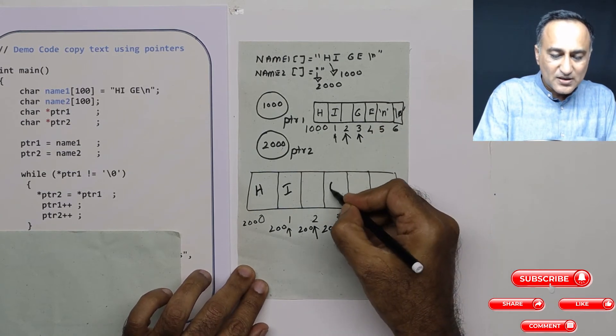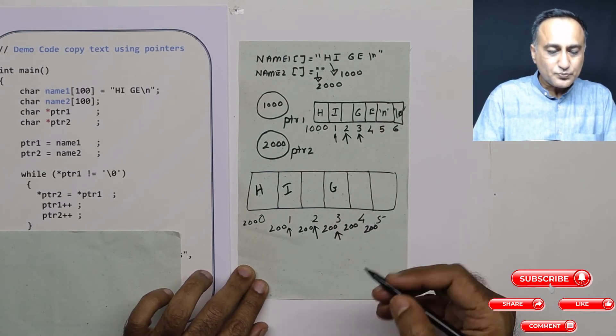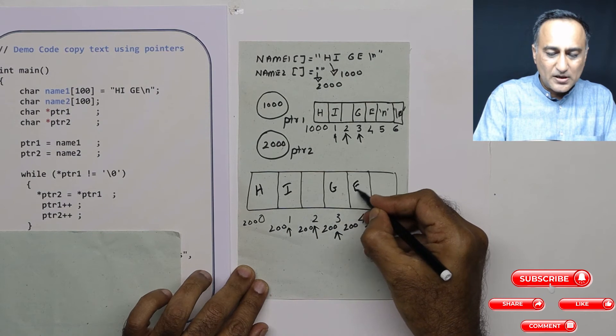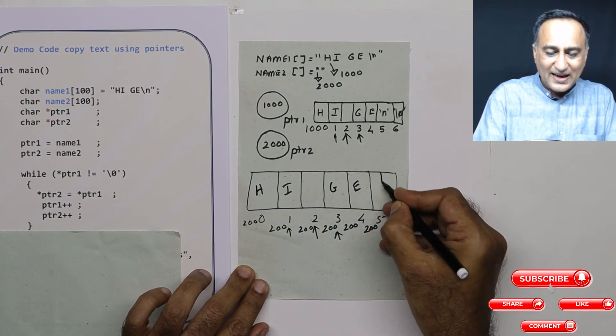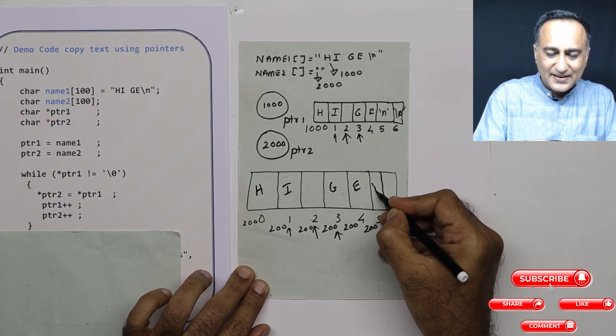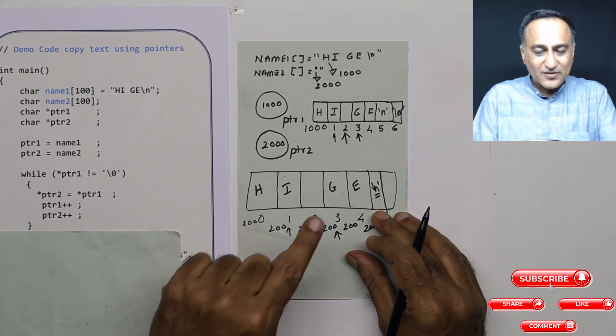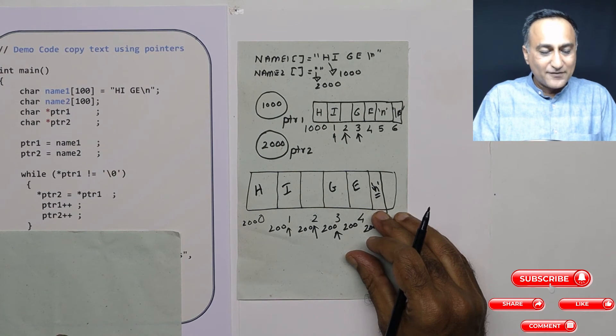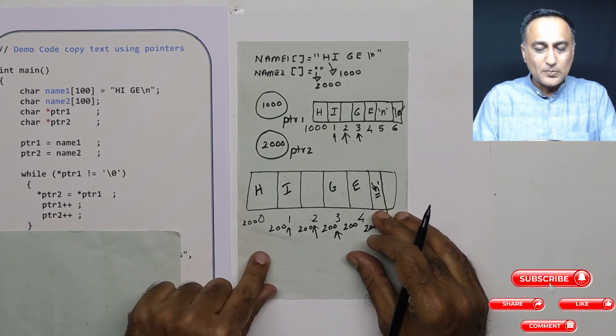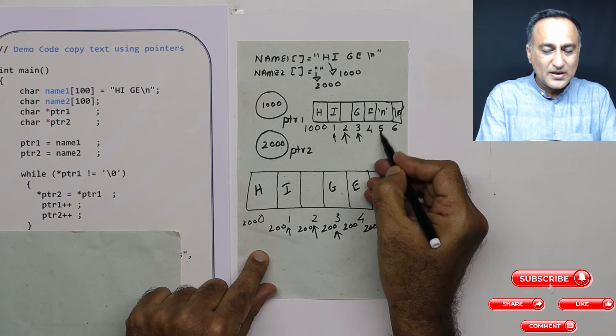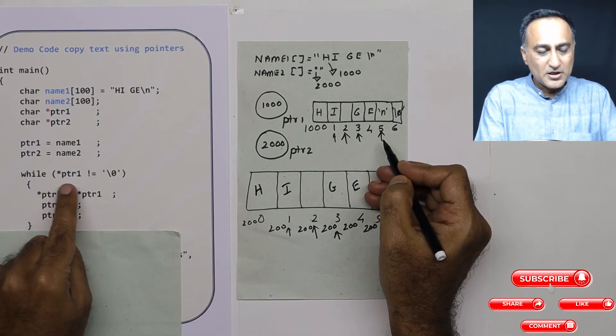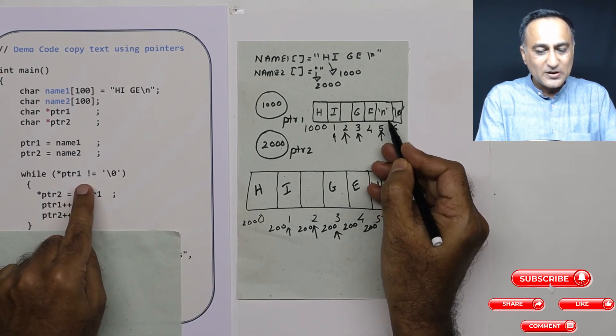So this content g is copied here. Next time e is going to be copied, then the enter key is copied. The enter key gets copied here. Now let's see what happens after the enter key gets copied. Let's go to the point where the enter key is being referred by ptr1. Location pointed to by ptr1 is equal to enter key.